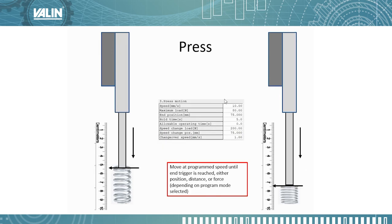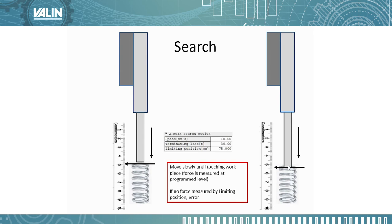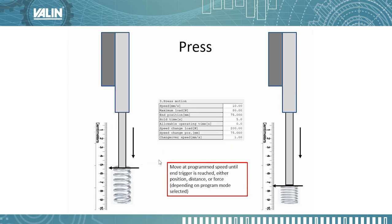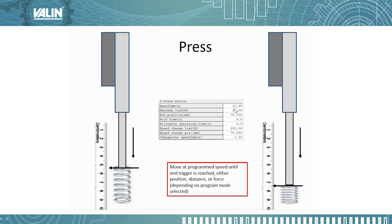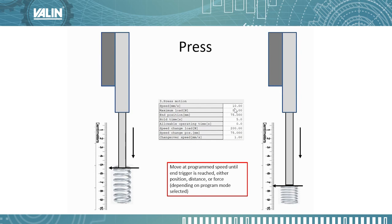Then comes the press step. The press step starts where the search step ended. We have all the criteria that we enter in, and the criteria used is based on which press mode you've selected. There are nine press modes, which I'll cover in a minute.